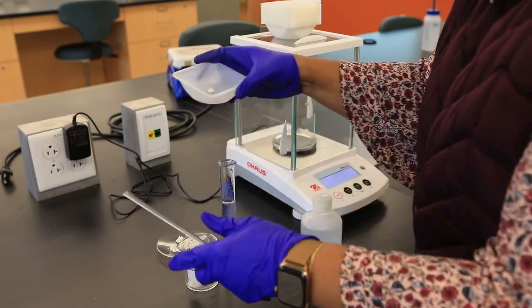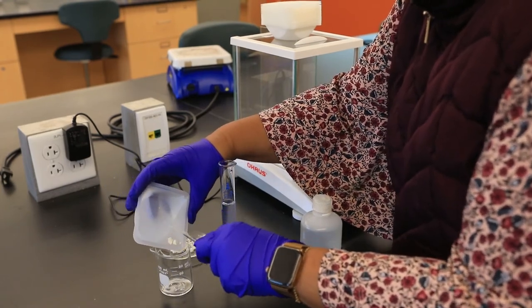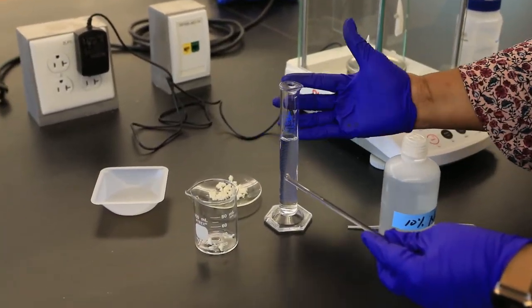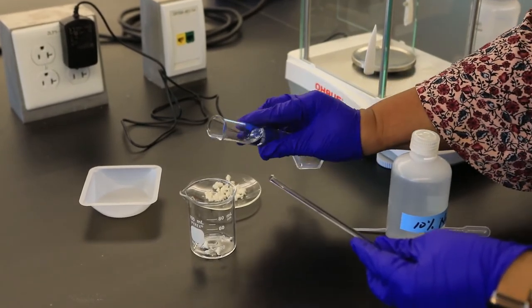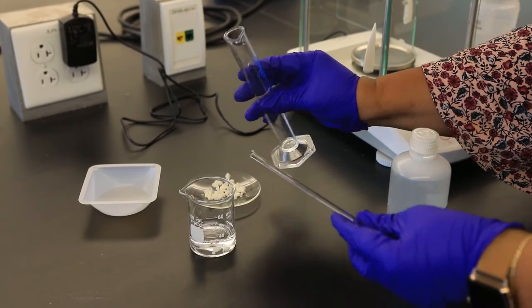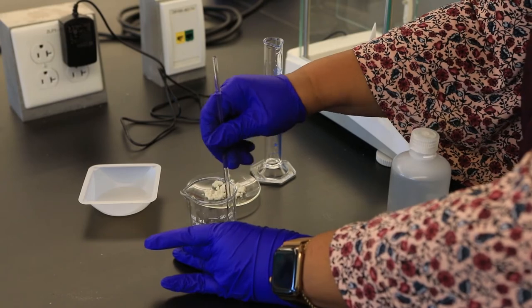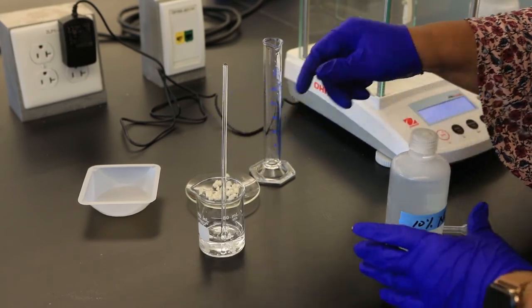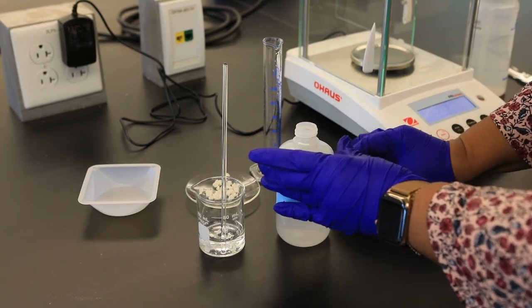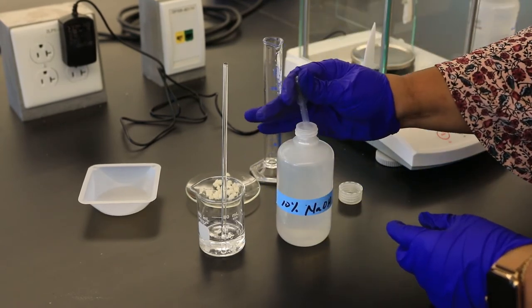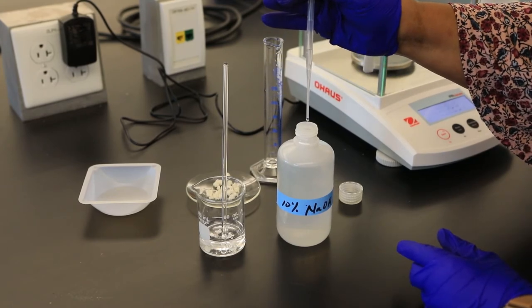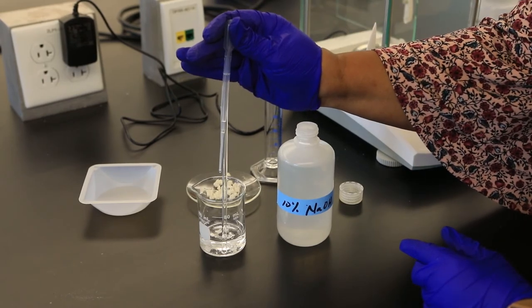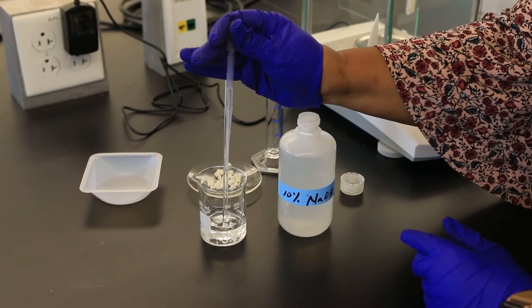I'm going to transfer the solid to our beaker. In order to do any testing on the casein, we need to make sure it's in solution. I'm going to dissolve our casein in 25 milliliters of water. To help ensure this solid completely dissolves, I'm also going to add 5 drops of sodium hydroxide - a 10% solution by mass volume percent. I'm going to carefully measure out 5 drops: 1, 2, 3, 4, 5.